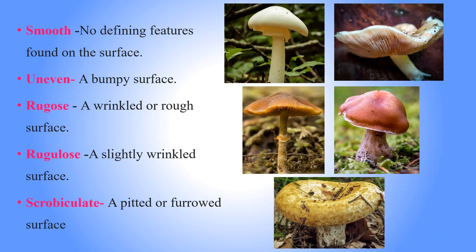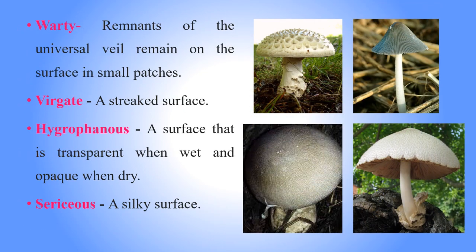The cap surface also varies. Smooth — no defining features on the surface. Uneven — a lumpy surface. Rugose — wrinkled or rough surface. Rugulose — slightly wrinkled surface. Scrobiculate — furrowed or pitted surface. Velar surface — small patch-like coverings. Virgate — a streaked surface. Hygrophanous — transparent when wet and opaque when dry. Sericeous — a silky surface.